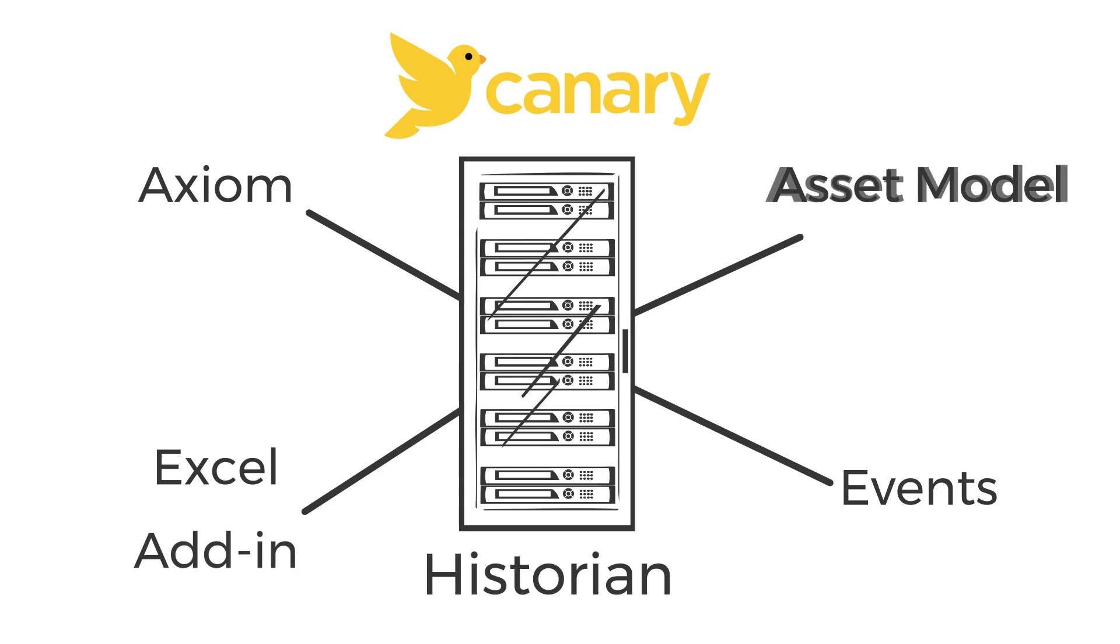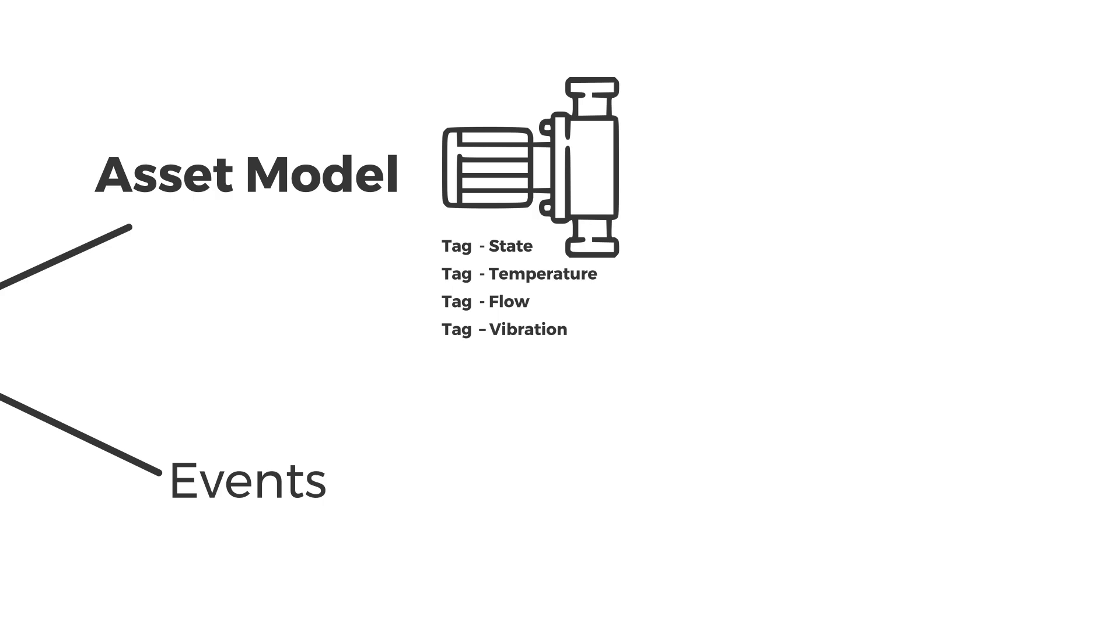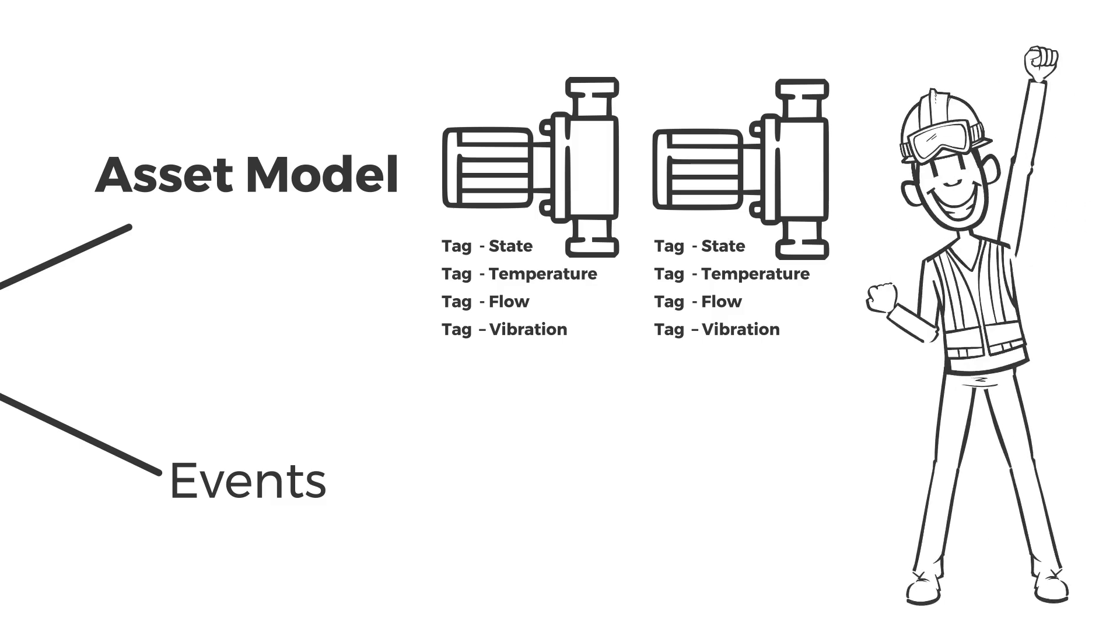Most organizations want to analyze their data by asset type. Canary makes it easy to do this using their asset model. By creating templates, tags are grouped into assets and auto-discovered when a new asset comes online.